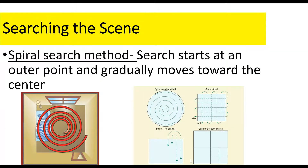The spiral search method starts at an outer point or an inner point and moves in the opposite direction — inward or outward, as you can see in the picture. A spiral search is good if you have an empty room or a room without a lot of obstacles. Outdoor spaces can also lend themselves to spiral searches. A single investigator can do this, spiraling out and checking for any evidence that needs to be marked.